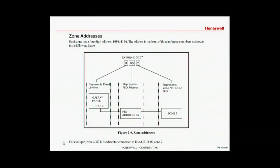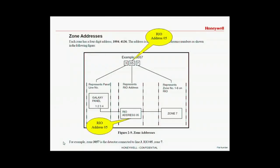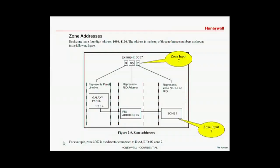When we look at individual zone addresses, the first digit will always be referenced to the dataline connected to the panel. The next two digits will be the module address — in this case it's 5, so it becomes 05. The final digit will be a zone number between 1 and 8, or alternatively if it's an output it will be between 1 and 4.